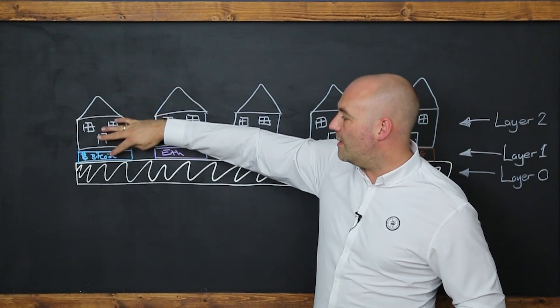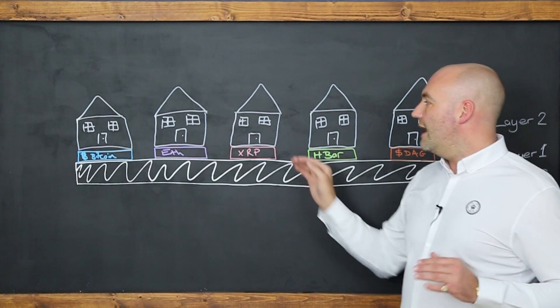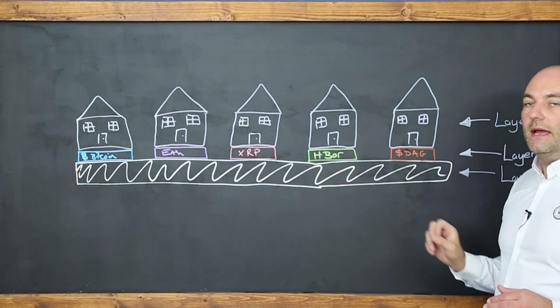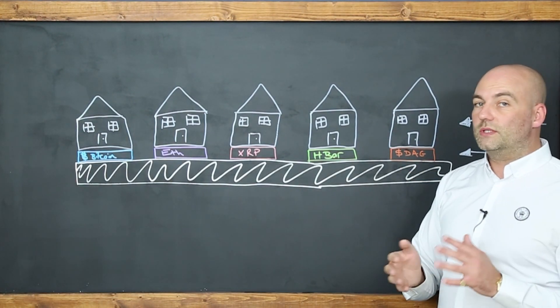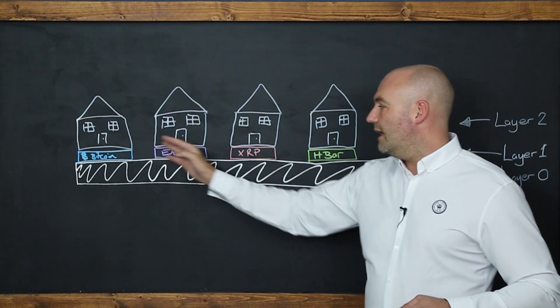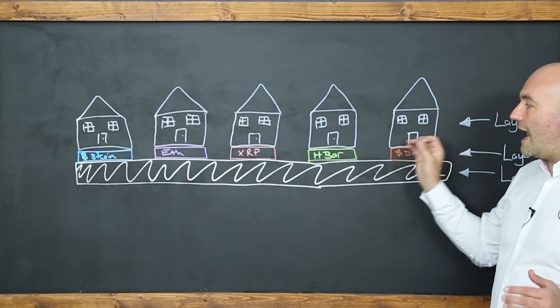So this is layer two. Layer two can be built on layer one. And what zero layer claims is that all platforms, all layer ones can be built on the zero layer. And the reason that's important is because it allows communication between each of the platforms, the layer ones, without having to leave.